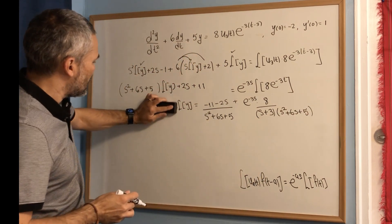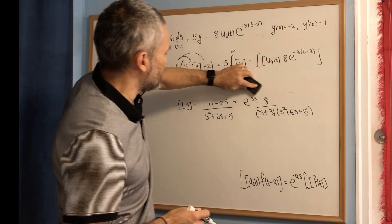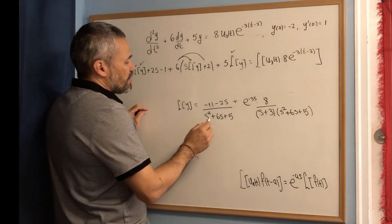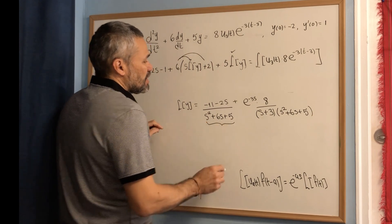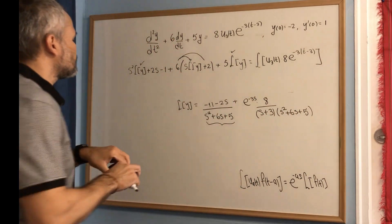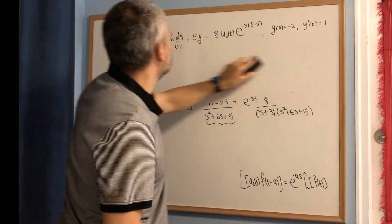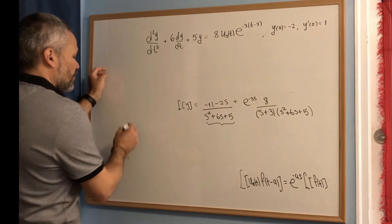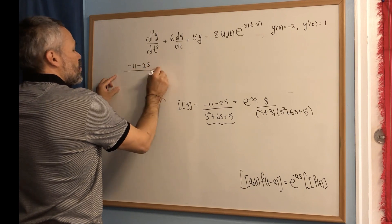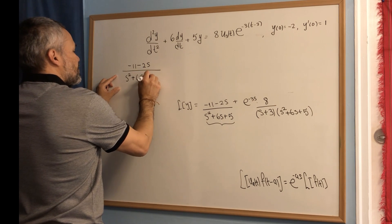To solve for L{y}, we divide by the factor s squared plus 6s plus 5. We now need to find two inverse Laplace transforms: one for the (−11 − 2s) / (s² + 6s + 5) part and one for the e^{−3s} part. Let's start with the first one. We rewrite it as negative 11 minus 2s over s squared plus 6s plus 5.